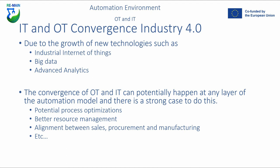The convergence of OT and IT can potentially happen at any layer of the automation model. By utilizing new technologies and IT's mature attitude to security in Industry 4.0, you can take advantage of process optimizations, better resource management, and closer alignment between IT and OT. This creates better alignment between departments — sales, procurement, manufacturing — giving business operations a better view of manufacturing operations. Combining data streams from IT and OT departments yields better insights to improve manufacturing and organizational decisions.